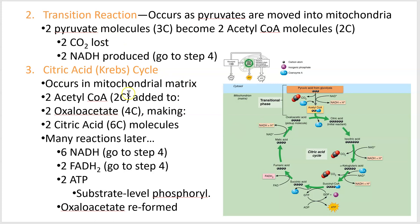Next we go to the citric acid cycle, also called the Krebs cycle after the person who discovered it. There are many steps — I had to learn them in majors cellular biology, but not for A&P. Here's the contracted version: we have two acetyl CoA molecules from two pyruvates from one glucose. Those two acetyl CoA are added to two oxaloacetate molecules.